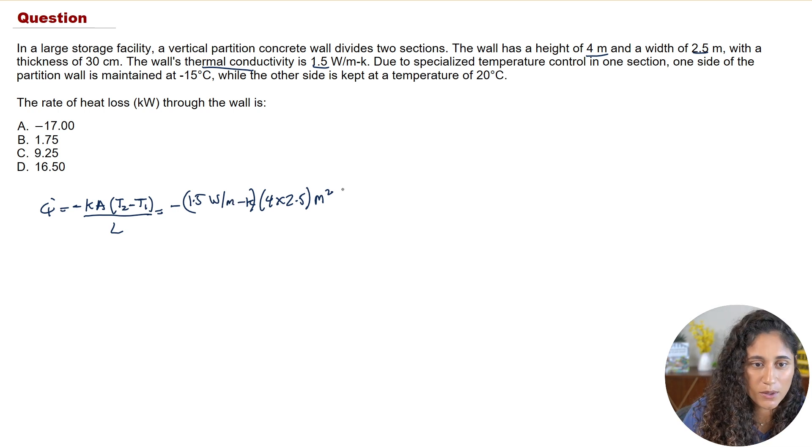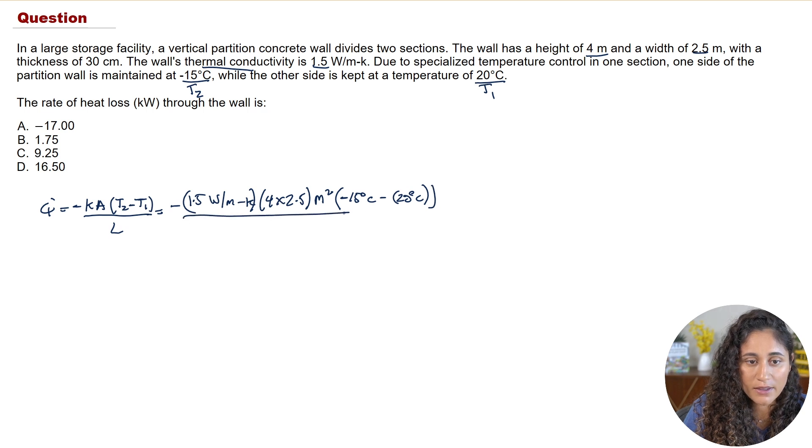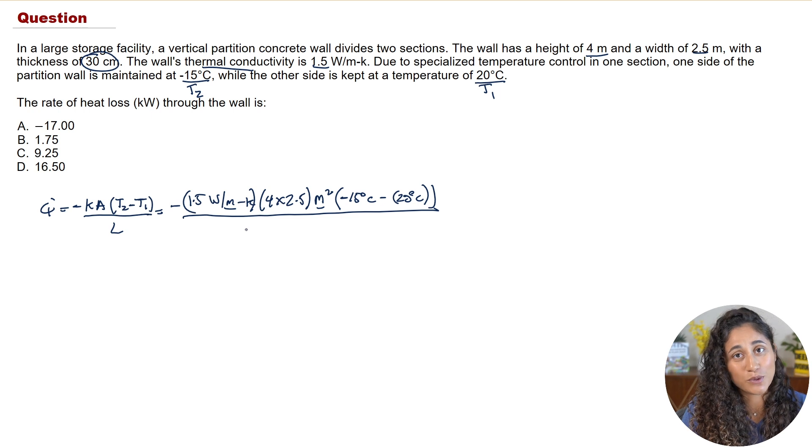Then we're going to multiply by the area so we were given the height and the width so the area is just going to be 4 times 2.5 and this is going to have the unit of meters squared. Then we're going to multiply this by T2 minus T1 so remember we said that heat energy is always transferred from high temperature region to lower temperature region so the higher temperature region T1 is 20 degrees celsius and T2 is minus 15, so here we're going to have minus 15 degrees celsius minus T1 which is 20 degrees celsius. Then we're going to divide this whole thing by the thickness which was given as 30 centimeters. Now the problem is that this is in meters so we got to make sure that we convert centimeters to meters, this is why it's really important that you write the units down. So we're going to do 30 centimeters divided by 100 to go from centimeters to meters and so now this is going to give us meters.